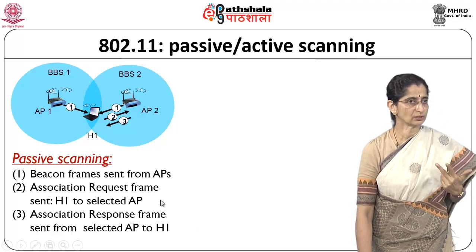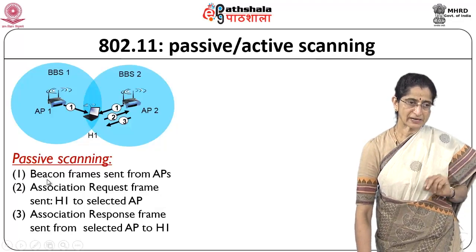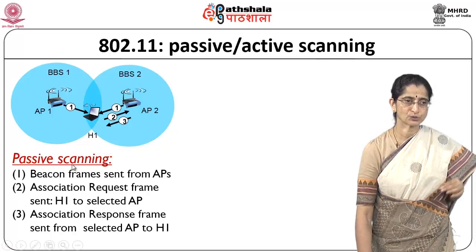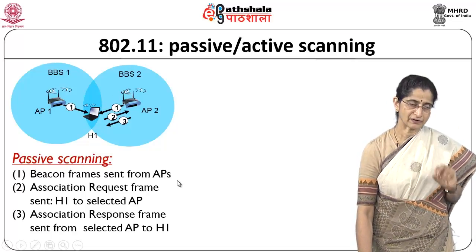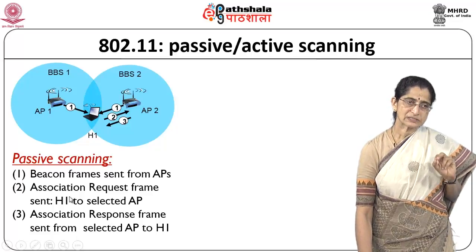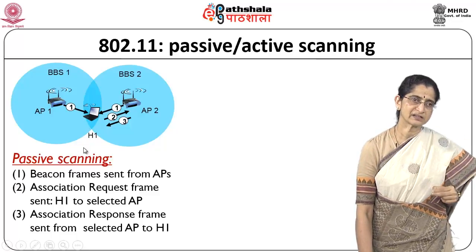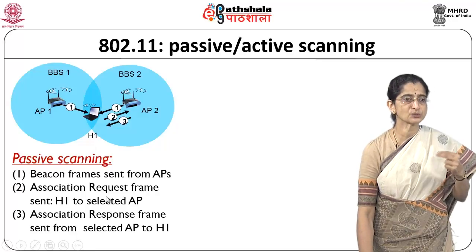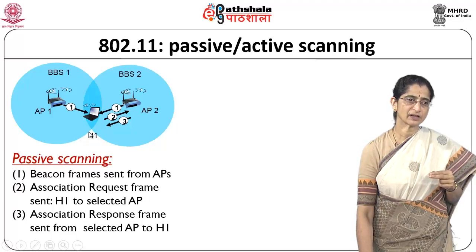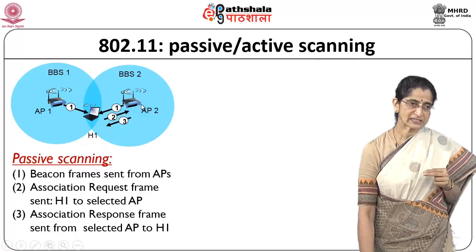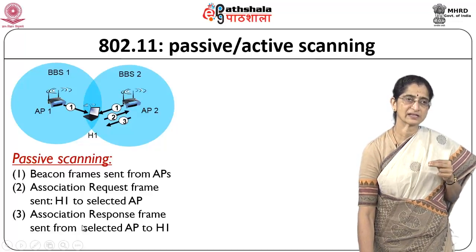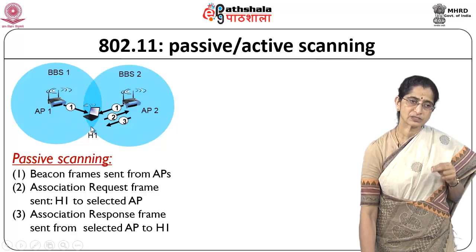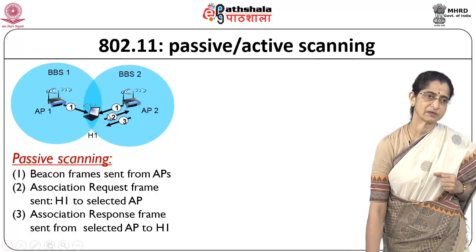There are two scanning modes: passive scanning and active scanning. In passive scanning, the host waits to hear beacon frames from access points. Step one: access points send beacon frames. Step two: host H1 hears these frames and based on signal strength or other criteria, chooses an access point and sends an association request frame to, for example, AP2. Step three: that access point sends back an association response frame confirming the association. The host is passive here — it is not actively initiating discovery.